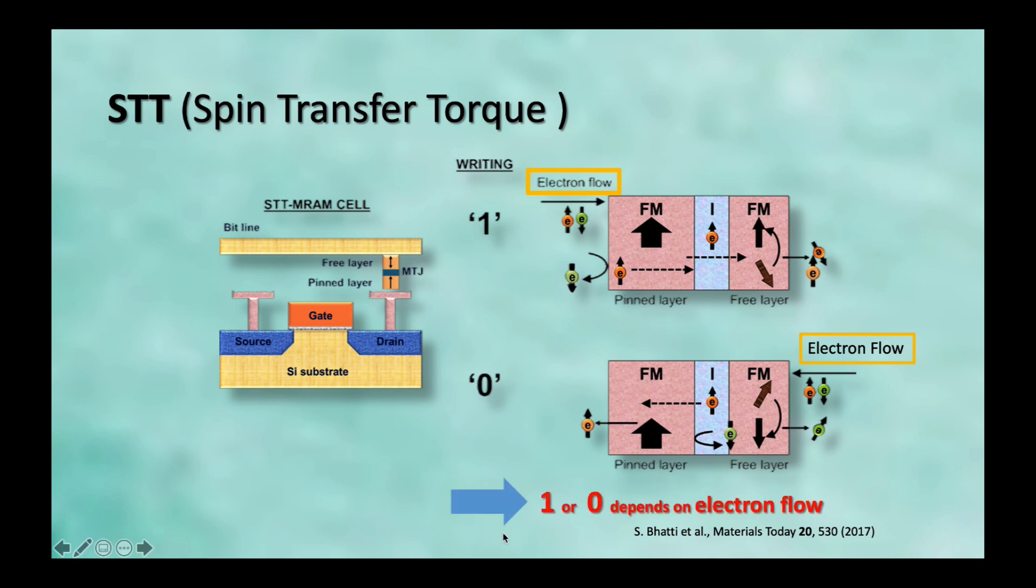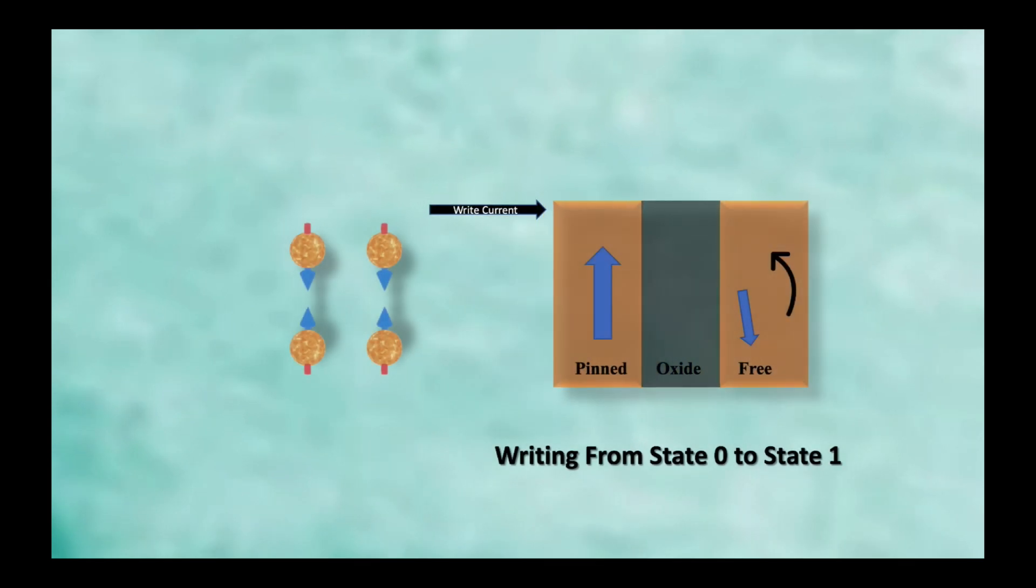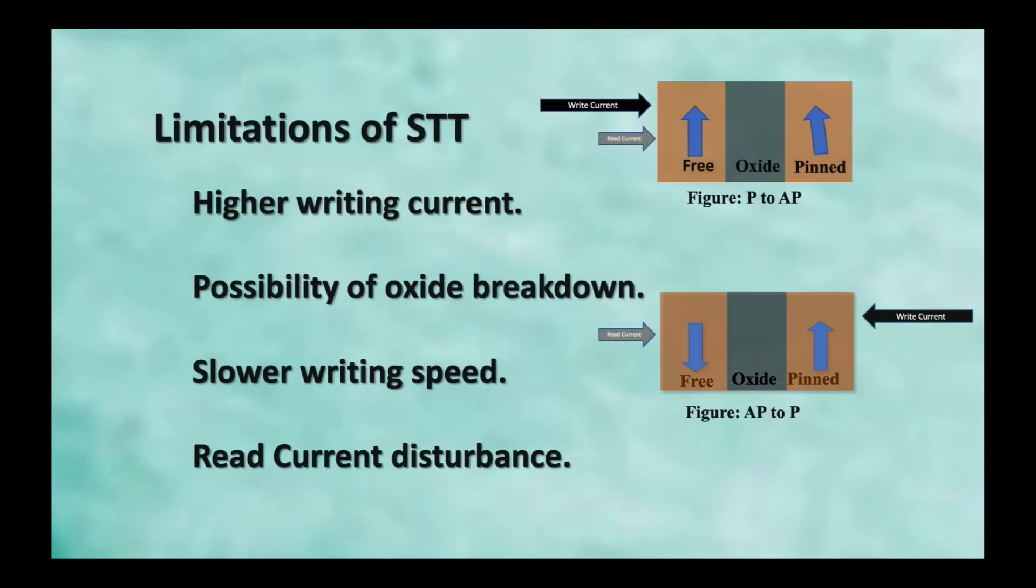So, in this way, we can achieve this anti-parallel configuration from parallel configuration. So, in this STT, 1 or 0 state depends on how we use the electron flow or the current. And, here is the small animation to show this effect. So, the electron will pass and then one kind of electron will reflect back and other kind of electron will tunnel through and rotate the magnetization.